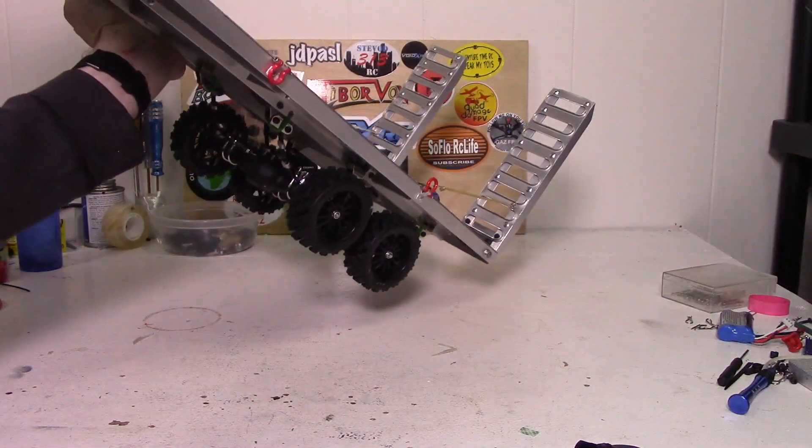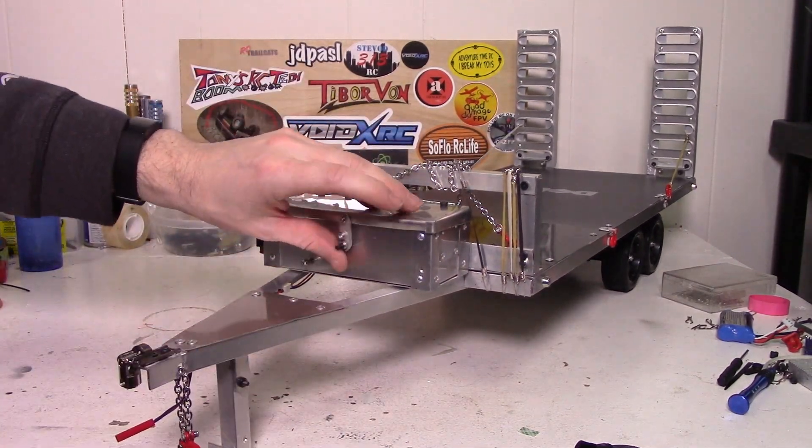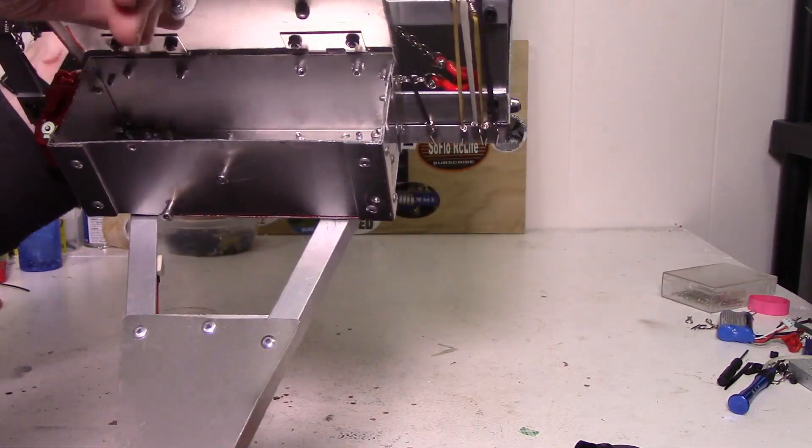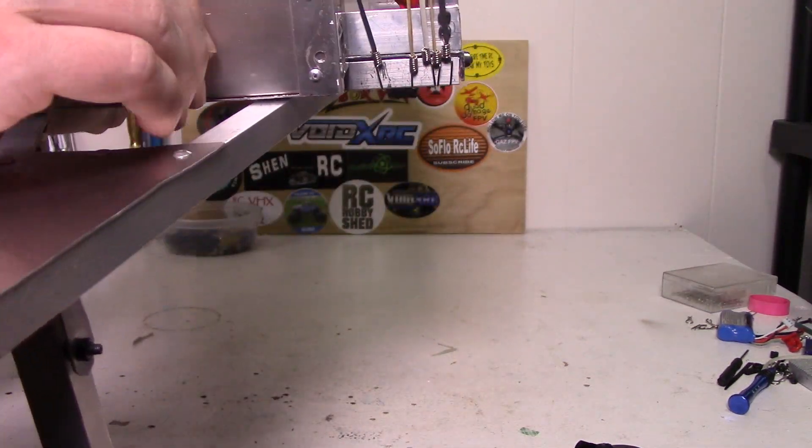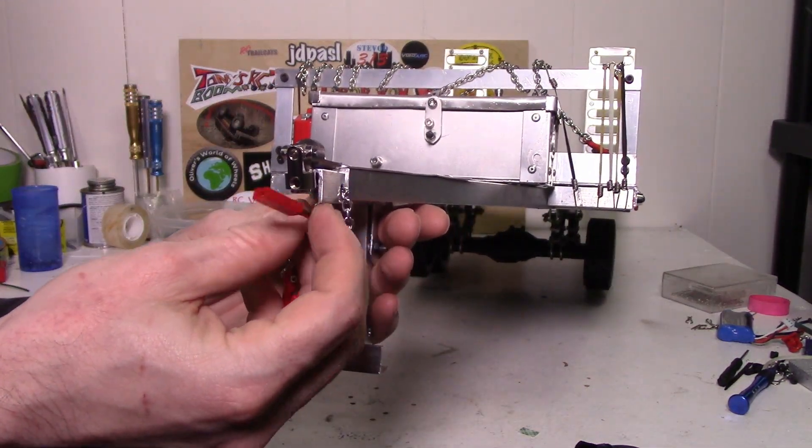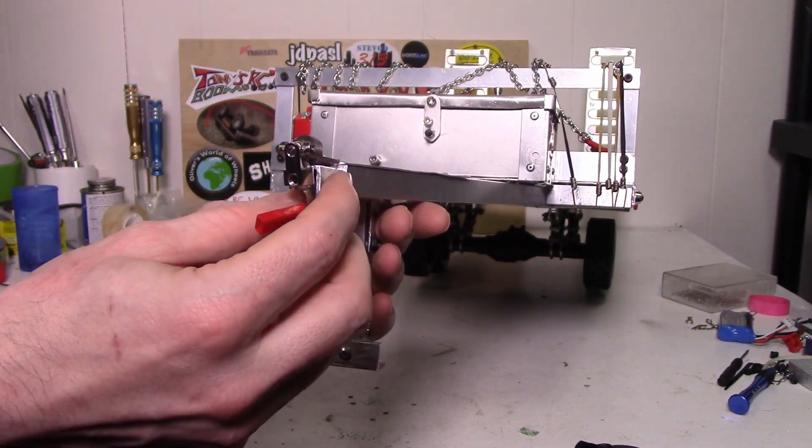I was originally going to just house a battery in here for the lights. Now it's empty, you can obviously see that I have not done that. Instead I have my power lead coming out here just like on a real trailer. So this will get powered off of my SCX-10 towing rig.